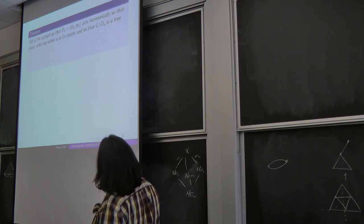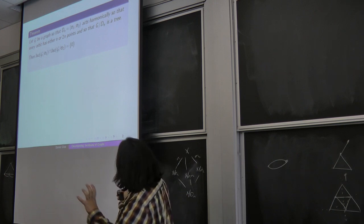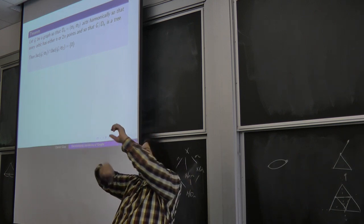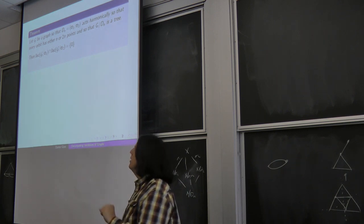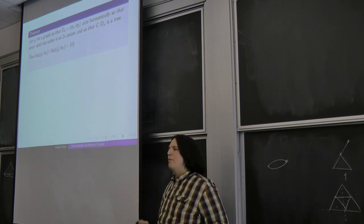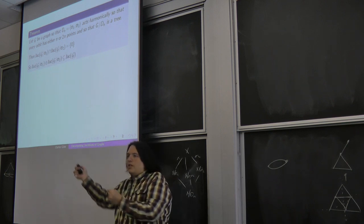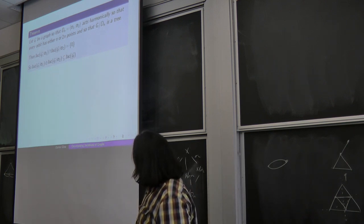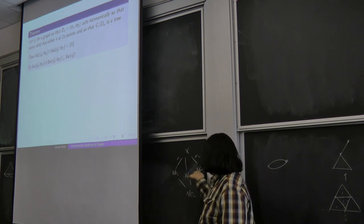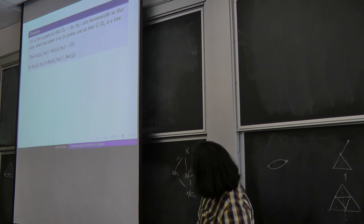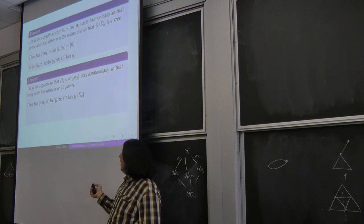This is not special to that example. In general, assuming the full quotient G/D_n is a tree, if you're in both pullback subgroups you must be constant on orbits and even on orbits of size n. You can fire things the right number of times to show any such element is trivial. Therefore the sum of the two Jacobians is a subgroup of the full Jacobian. If the full quotient is not a tree, the intersection of the two Jacobian pullbacks maps into the Jacobian of the full quotient.